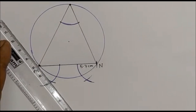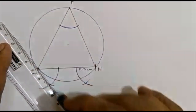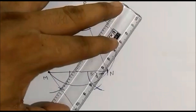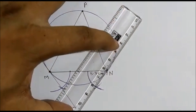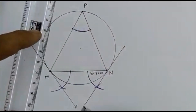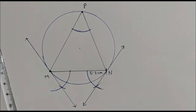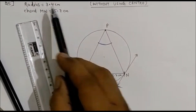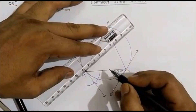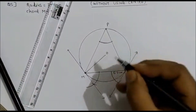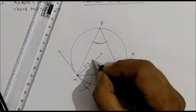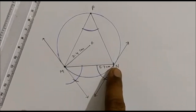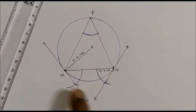Now draw the tangents. We have got the tangents — one tangent at point M and a second tangent at point N. So you have got two tangents. The radius of the circle is given as 3.4 cm, so we can mark that here. Mark the center as O, and this is 3.4 cm. So this is the tangent — we have drawn tangents at M and N without using the center.